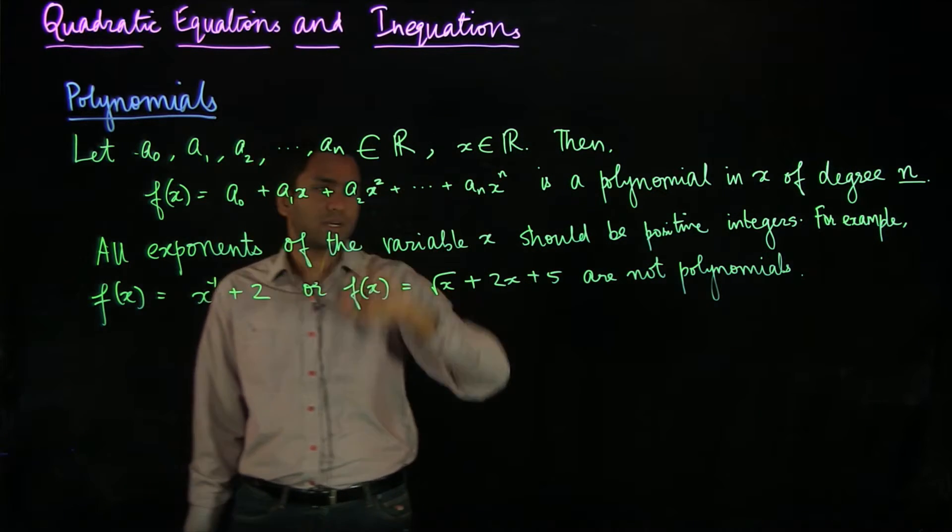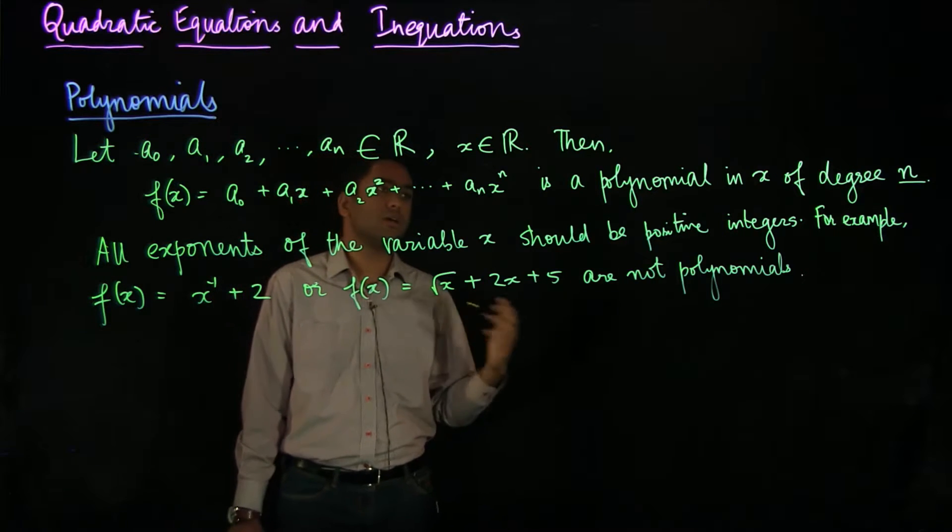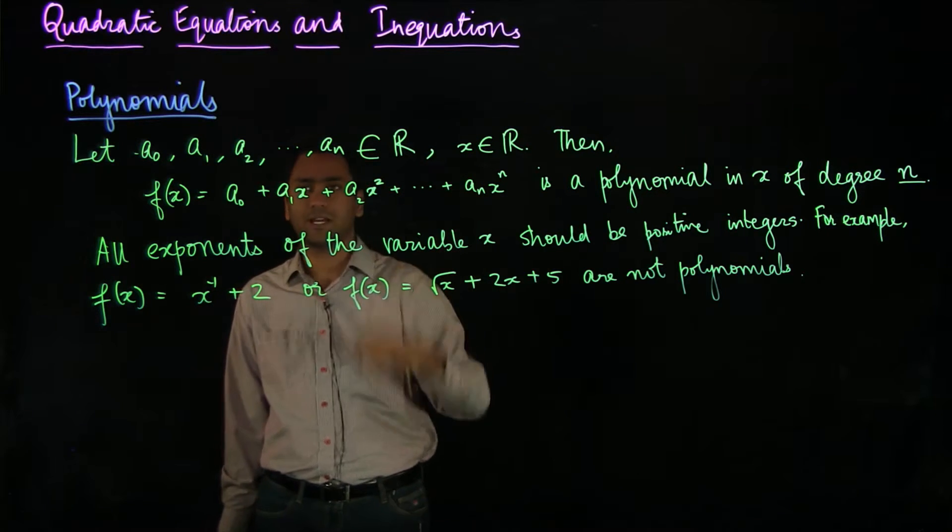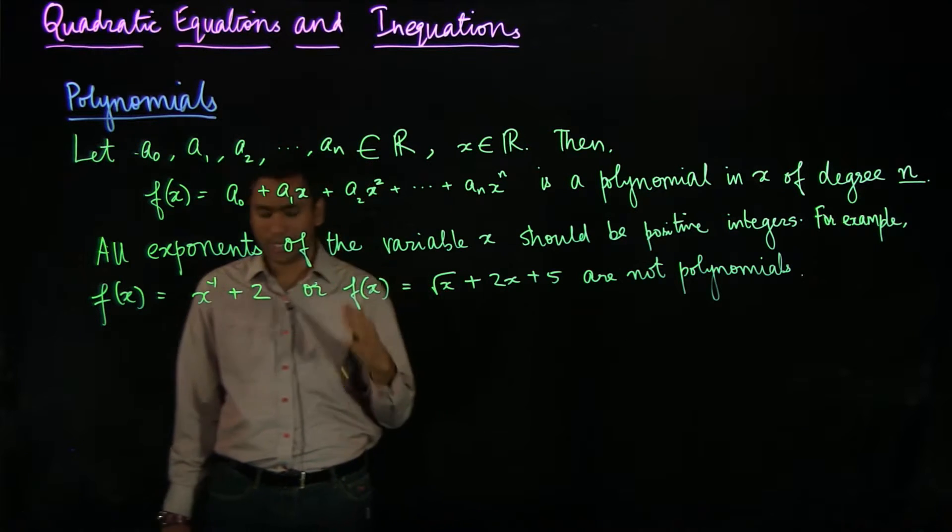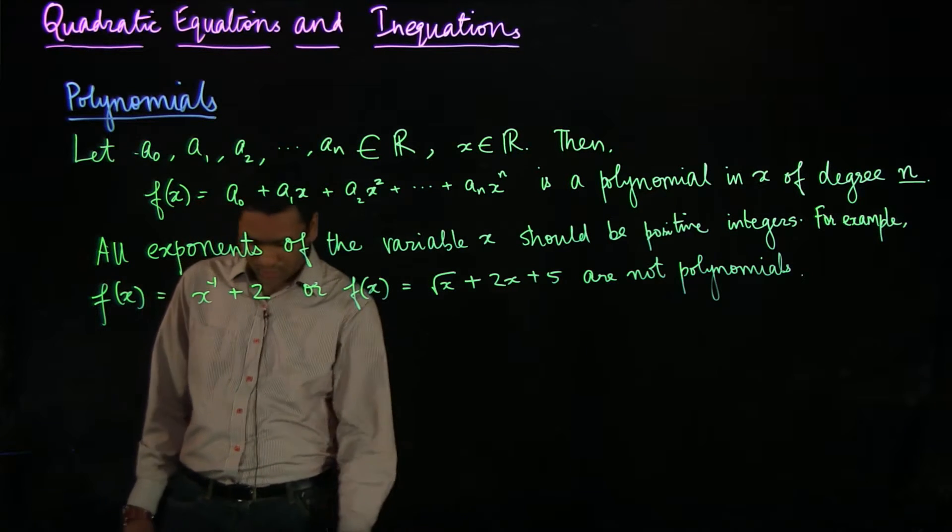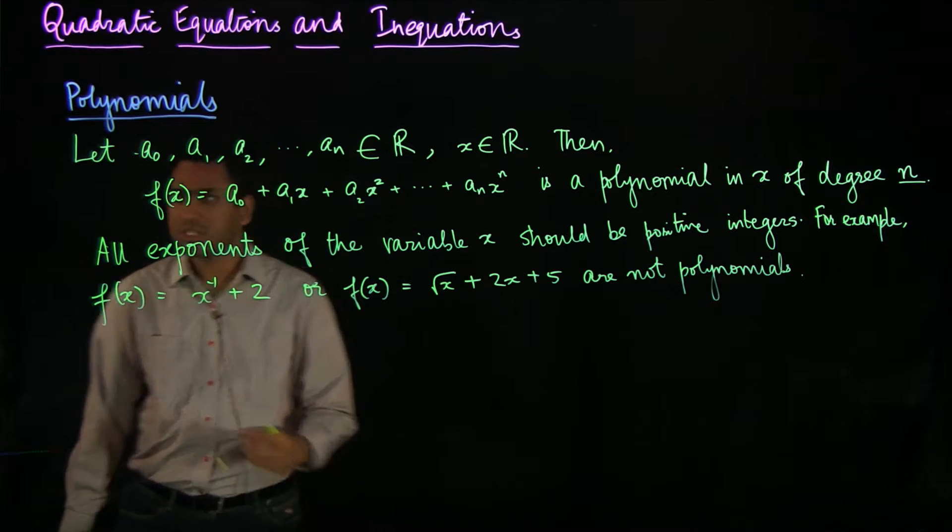This what we have written here is a real polynomial because x belongs to the set of real numbers and all the coefficients a0, a1 up to an are also real numbers.